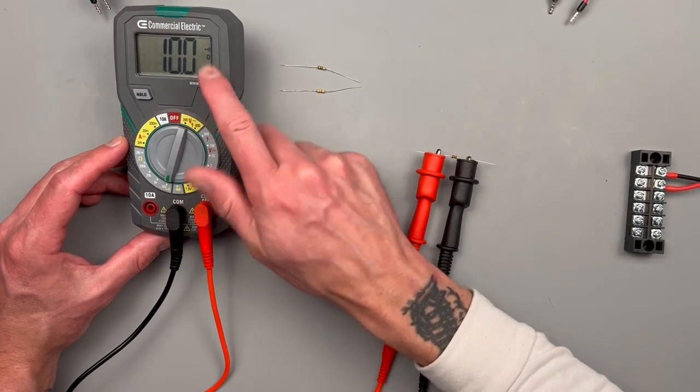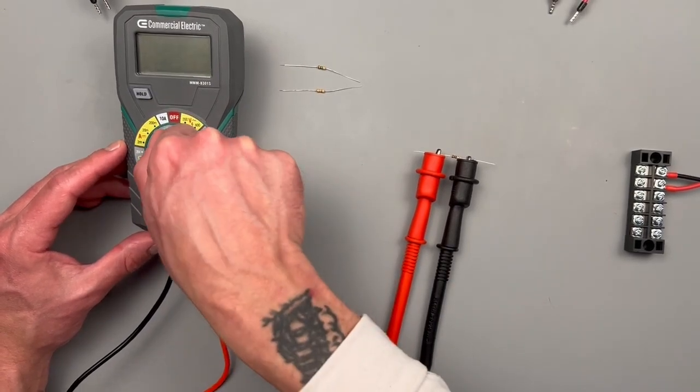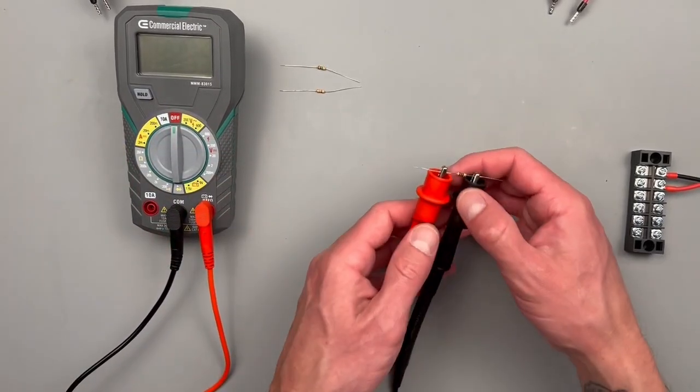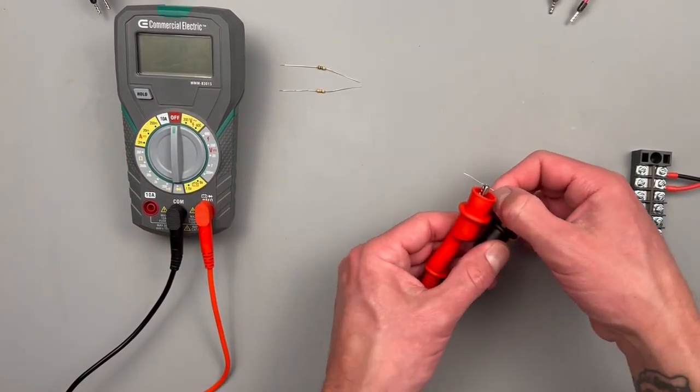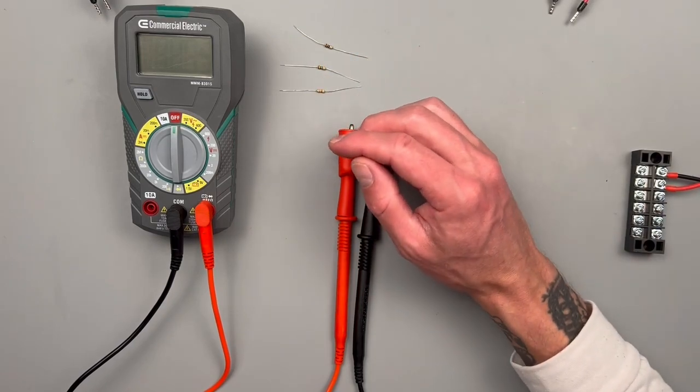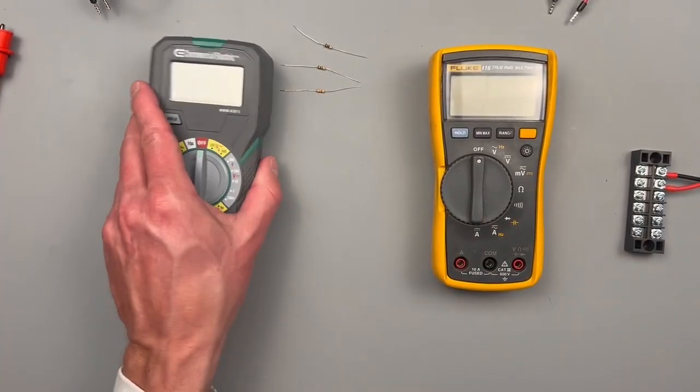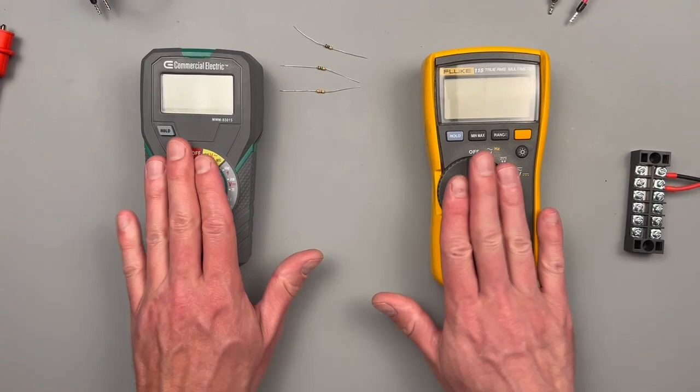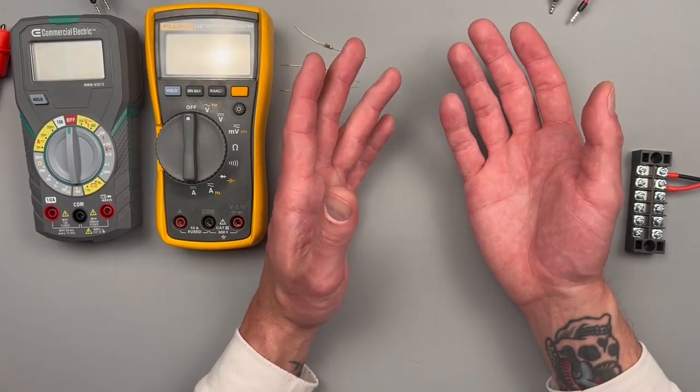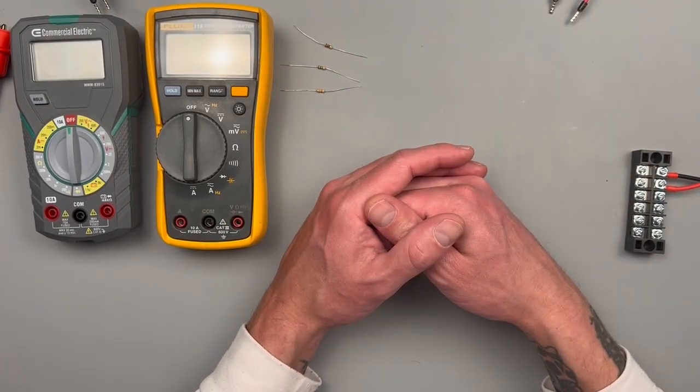That's kind of the main difference when making these types of measurements between an auto ranging and a manually selecting meter that you need to look out for. So those are the basics of reading continuity and resistance. I hope that helps. If you have any questions please let me know down in the comments and I'll do my best to get back to you. Thanks.